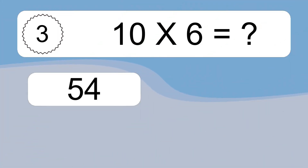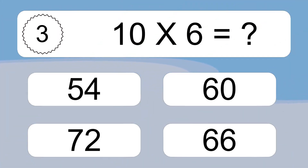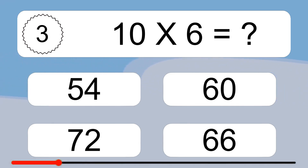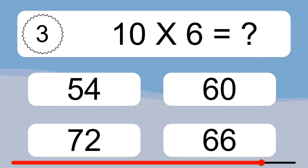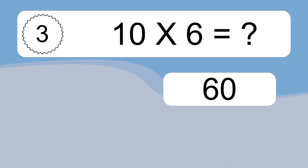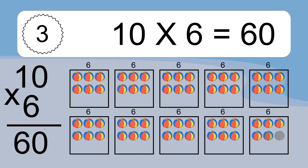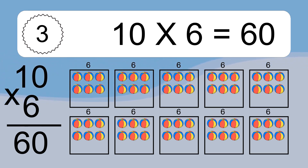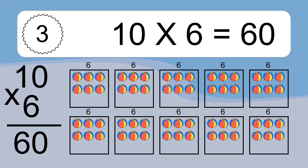Ten times six equals what? Ten times six equals sixty. We have ten boxes, and each box has six colorful balls inside. If you count all the balls in all the boxes together, you will have ten times six balls. This equals sixty balls.